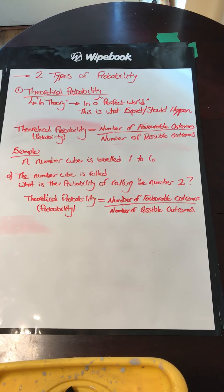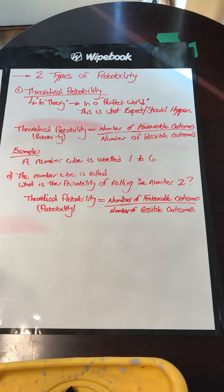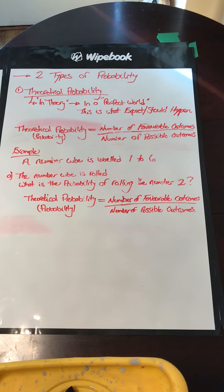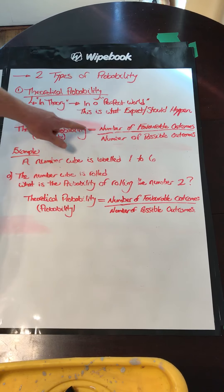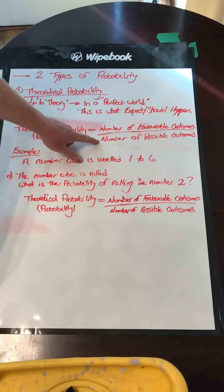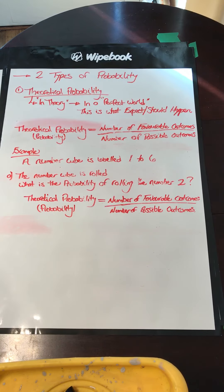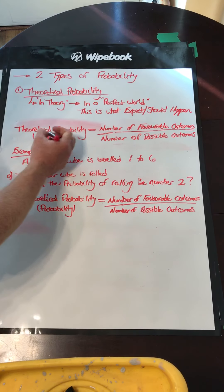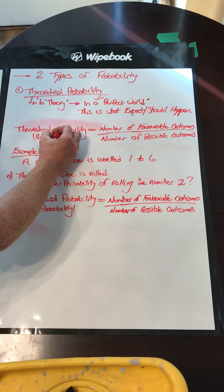We're going to be talking about two types of probability. We have theoretical probability, which is in theory, in a perfect world — this is what is expected or should happen. Theoretical probability is the number of favorable outcomes divided by the number of possible outcomes. Sometimes theoretical probability is just referred to as probability.